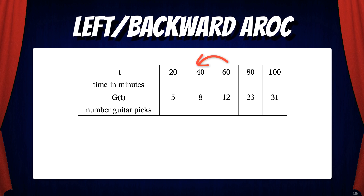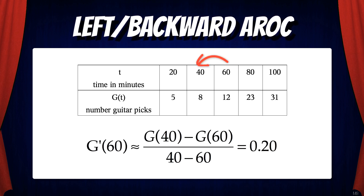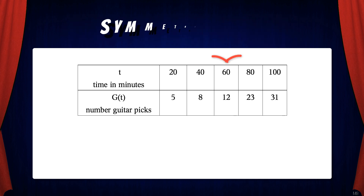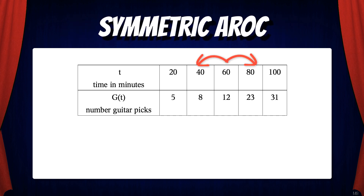Now if we look at a left or backward AROC, we would have g prime of 60 is approximately equal to g of 40 minus g of 60 over 40 minus 60. That equals 0.20.